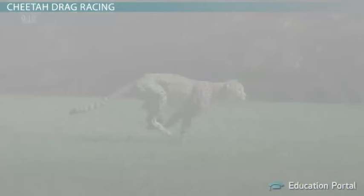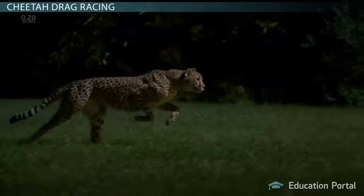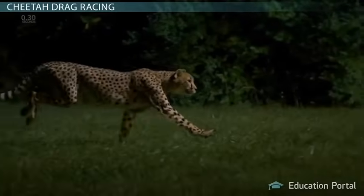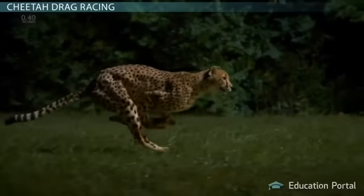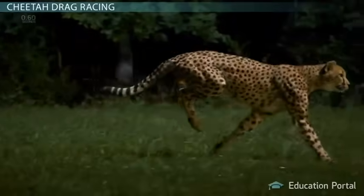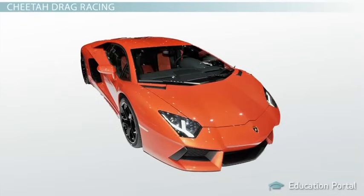But what I find even more incredible is that the cheetah is able to be standing still one second and three seconds later, it's running 100 kilometers per hour. Most of your high-end cars require between four and six seconds to do what that cheetah does in three seconds. And with this quick analogy, we can get to the meat of this lesson: acceleration.